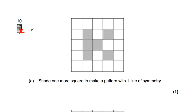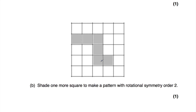Question number 10, Part A: we've got a grid with some squares shaded and we need to shade one more square to make a pattern with one line of symmetry. Shading in a particular square gives a horizontal line of symmetry. Part B: shade one more square to make a pattern with rotational symmetry order 2. Shading the correct square means spinning the shape through 360 degrees it lands on itself twice — once at 180 degrees and once at 360 degrees.